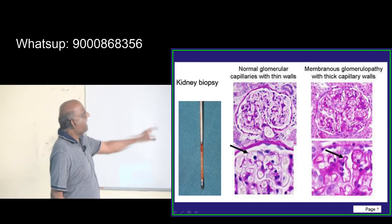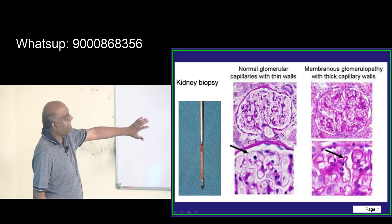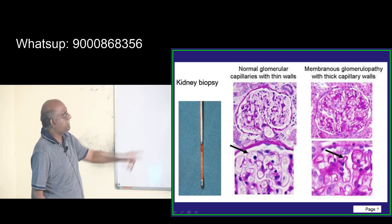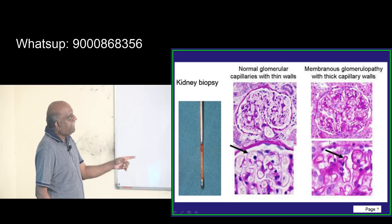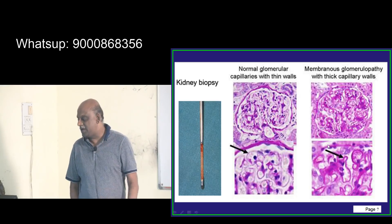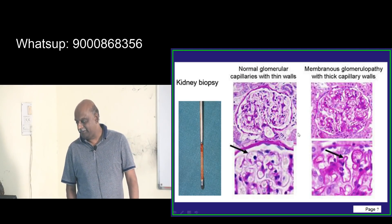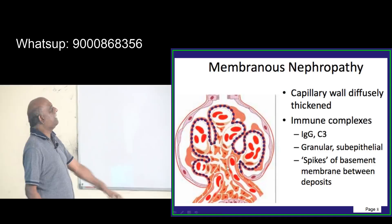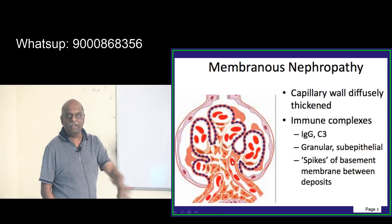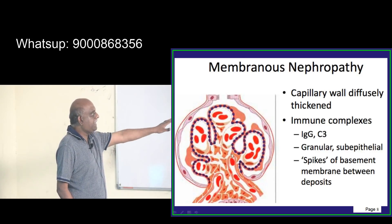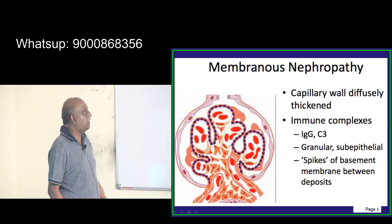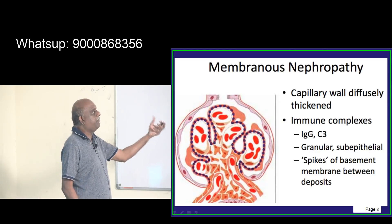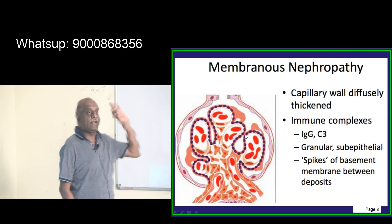These are the normal glomerular capillaries with thin walls. Then there is thickening of the capillary walls — this is how membranous nephropathy with thick capillary walls typically presents. Capillary walls are thickened, there are immune complexes of IgG and complement C3, and there are sub-epithelial granular deposits into the glomerulus.